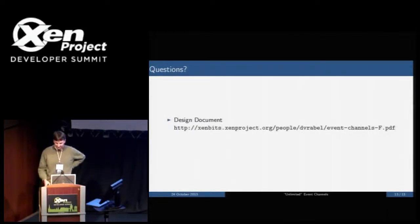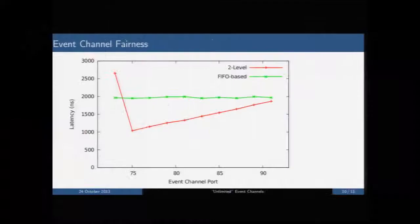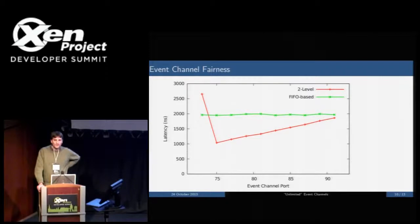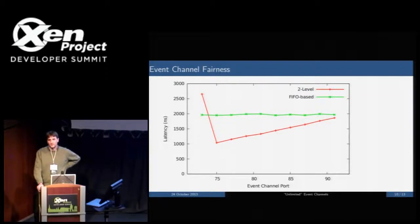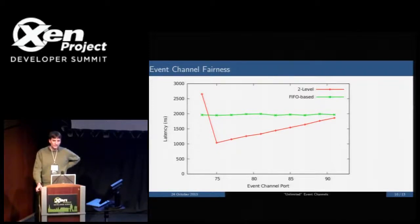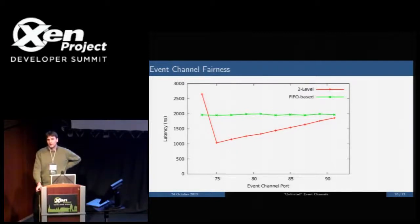Q: On the latency fairness graph, it looks like the average latency is fairer but higher in the new scheme. Do you know where that extra latency comes from? A: Most of it likely comes from the extra cost of linking and unlinking — the compare-and-exchange is more expensive than a simple test-and-clear of bits. There's also the additional exchange on the ready field after handling each event to check for higher-priority queues pending, which may add extra cost.